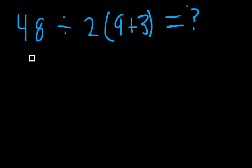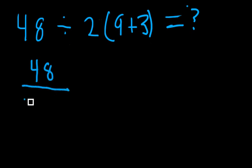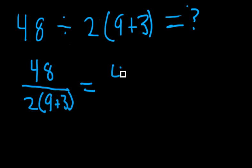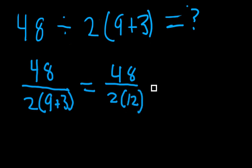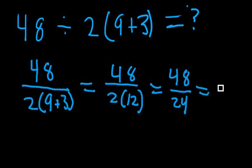This is how most people would solve the problem: put 48 and convert it into a fraction, which is over 2 times (9 plus 3), which equals 48 over 2 times 12 in parentheses, which is 48 over 24, which equals 2.